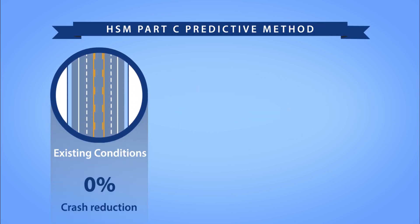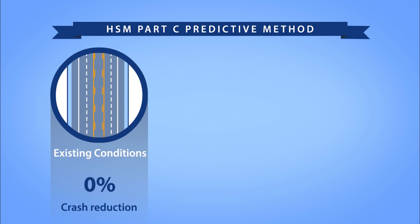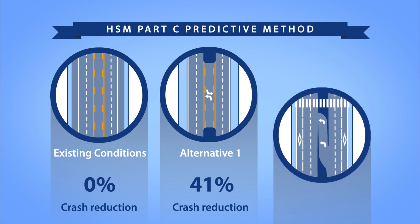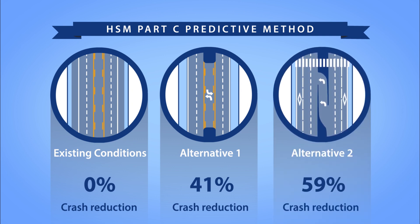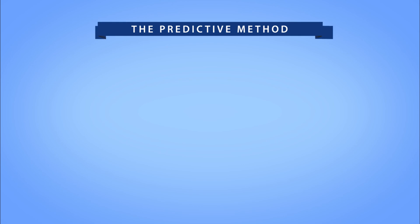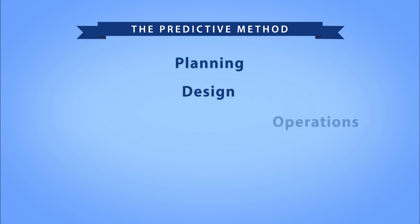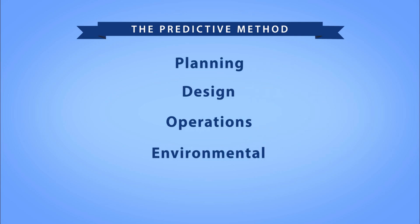The predictive method can help you estimate the long-term average crash frequency of a particular location and quantify the safety performance of existing and proposed designs. You can consider this information alongside other factors like operational performance and environmental impacts. The predictive method helps users make more informed decisions throughout the project development process, including planning, design, operations, environmental, and maintenance.